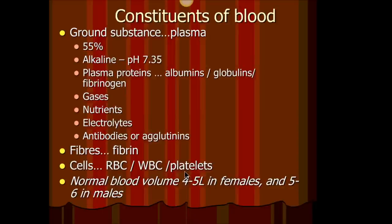Now let's look at some properties of plasma. It's mainly liquid and forms 55% of the blood. Its pH is alkaline, between 7.35 to 7.45. It contains many substances, including some large proteins known as plasma proteins. Have you heard of something called serum albumin? It's a huge protein present in blood.